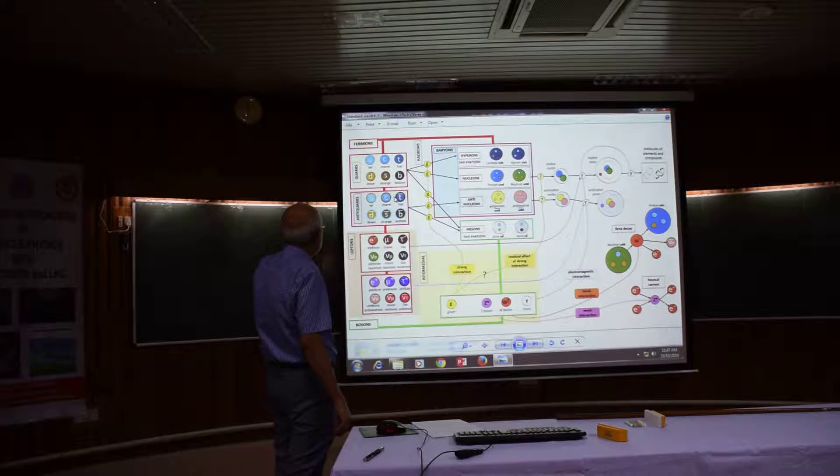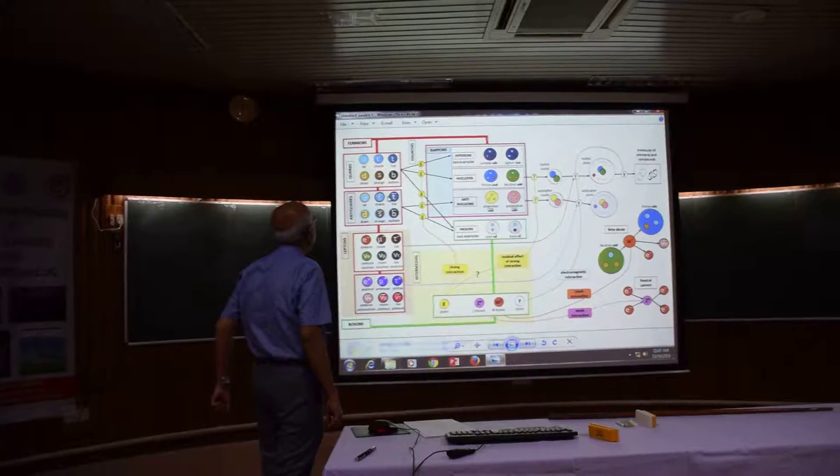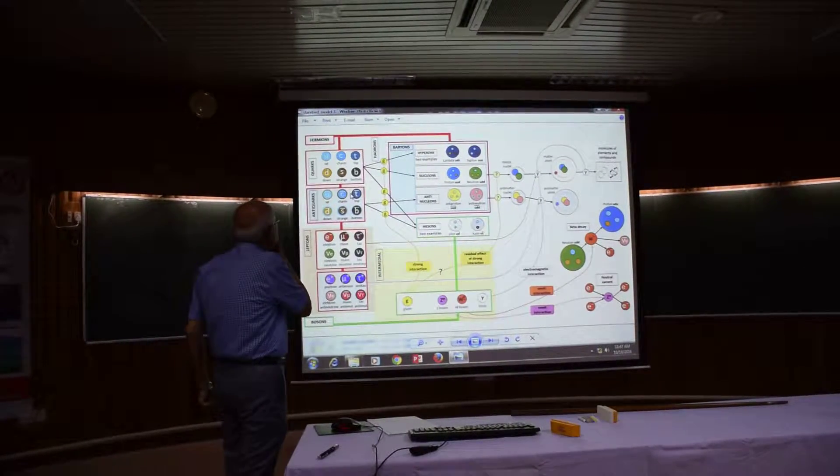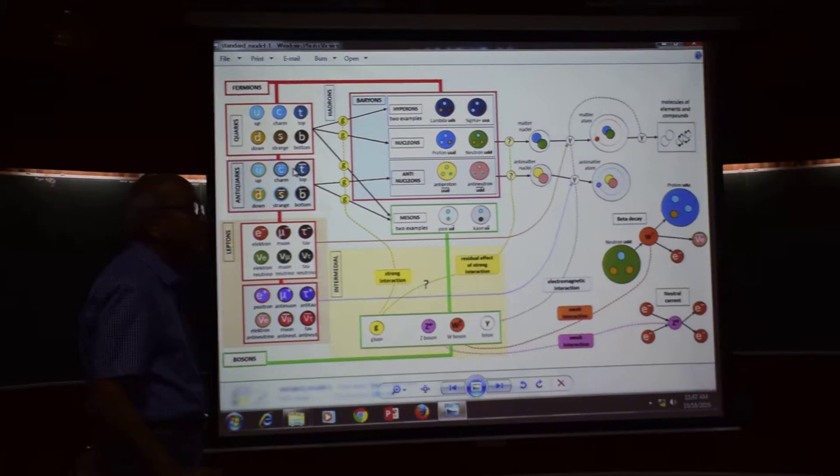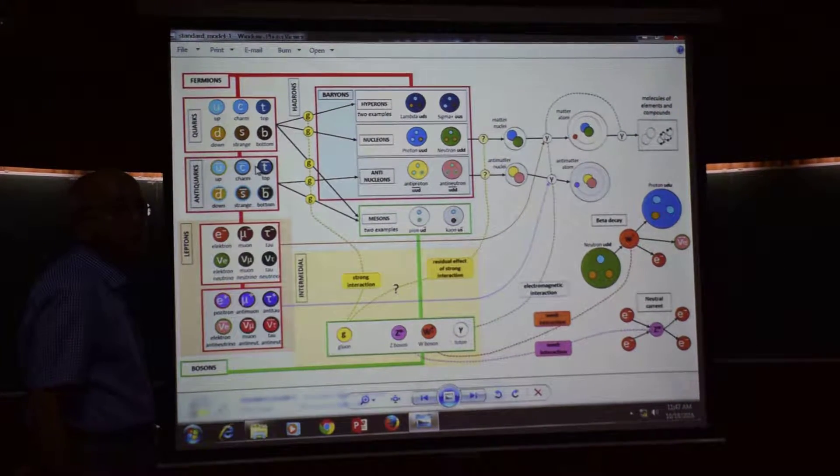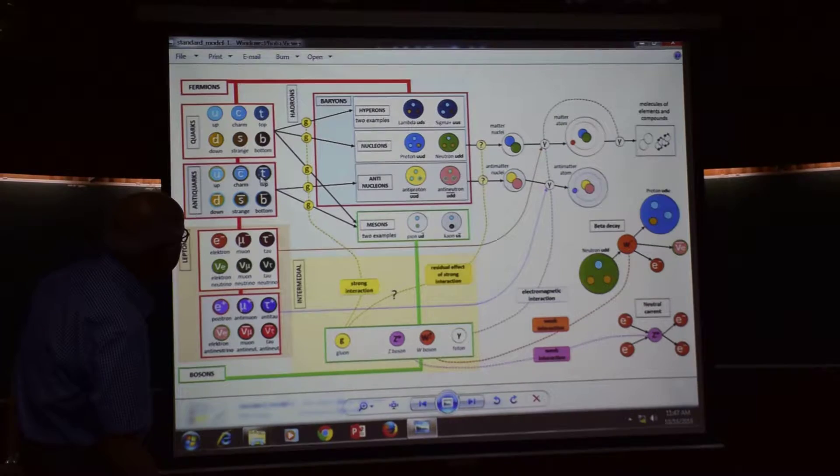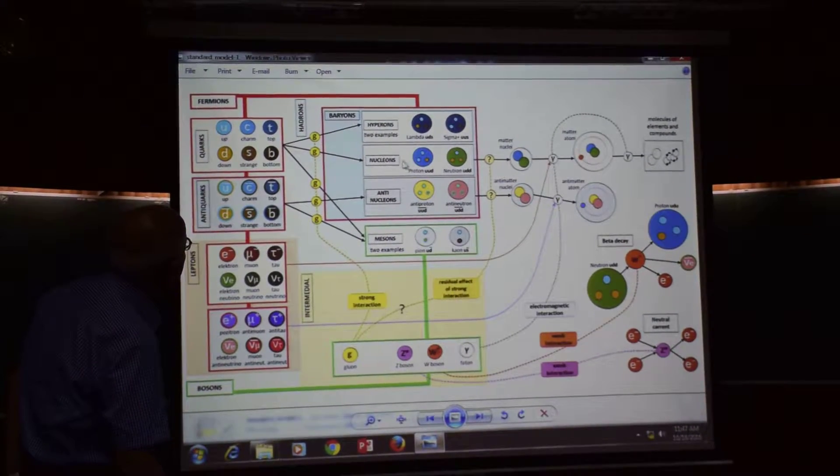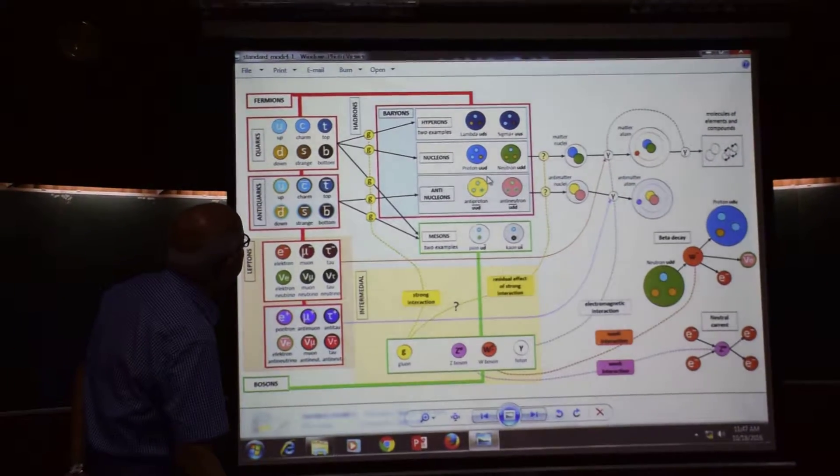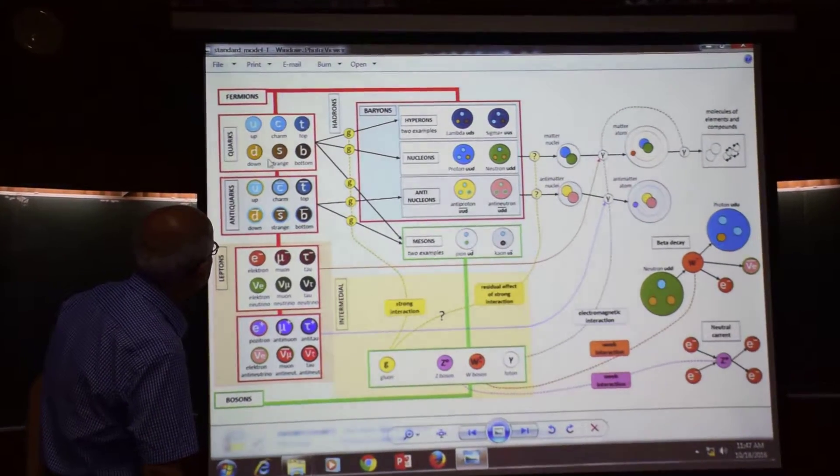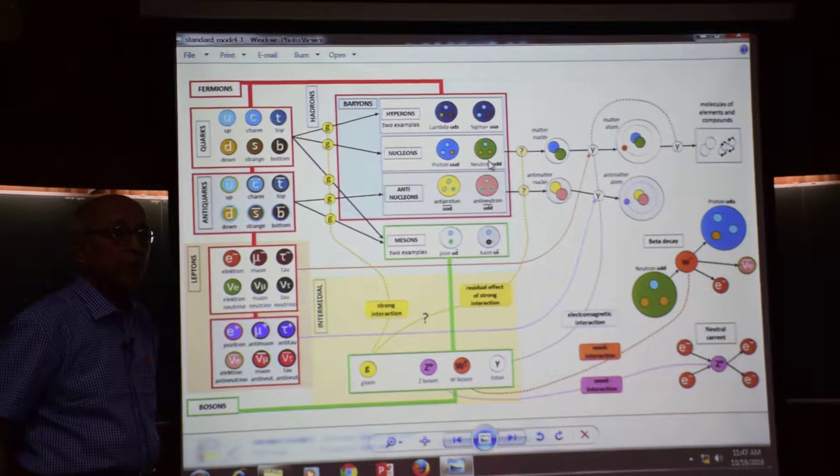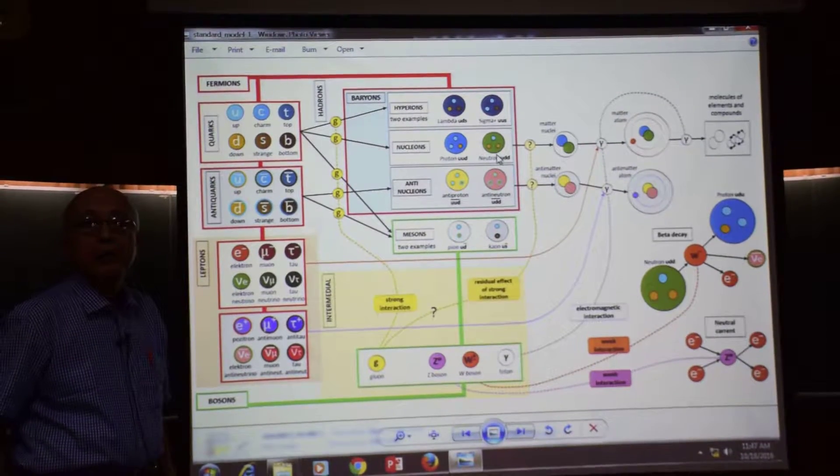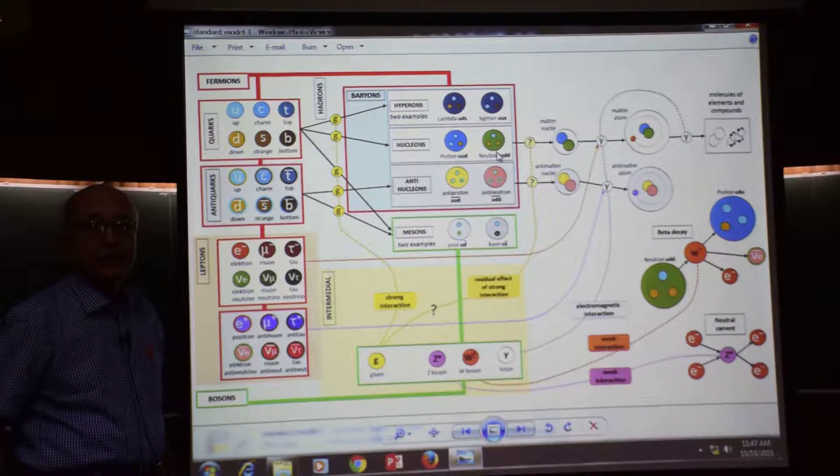If you further look into these particles, you will find that in our everyday life we encounter only a very small subset - the proton, the neutron, and u and d type quarks. So they are there.